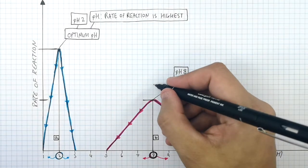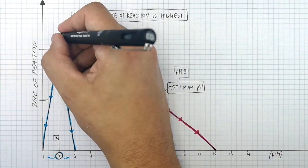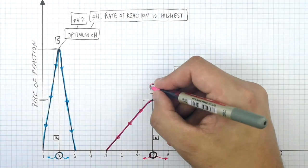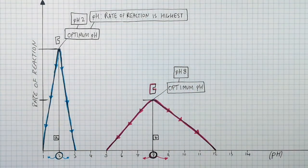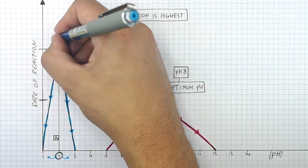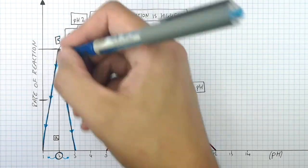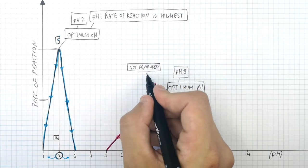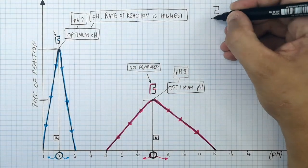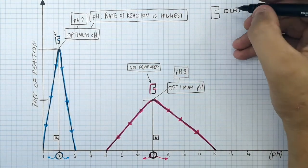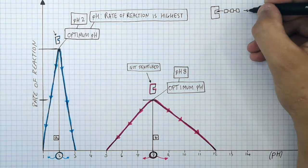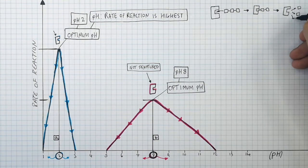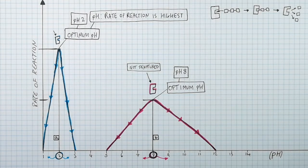At the optimum pH for enzyme B and the optimum pH for enzyme A, which is pH2, the enzymes are not denatured at all. The enzyme's active site has not changed shape. This means the substrate can bind the active site of the enzyme, form an enzyme-substrate complex, and then break down the substrate into products. And this takes place at the highest rate.